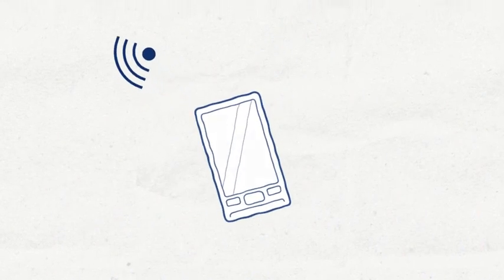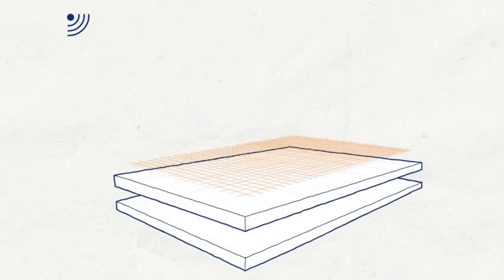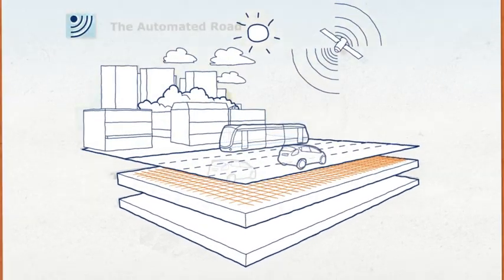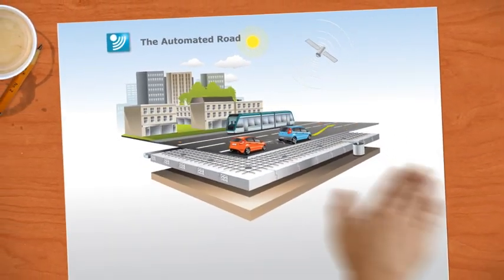It's envisaged that the hub of all this information exchange will be the driver's own mobile phone. Clearly, our future roads will be intelligent roads. The automated road, fully integrated with the user, vehicle and operations.